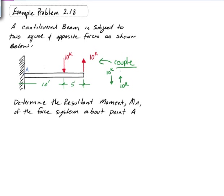So what we're going to do is determine the resultant moment about point A of the force system. Let's start off by finding the distances. We have the first force, we'll call this one F1, and the second one F2.